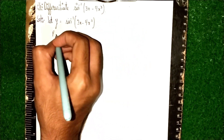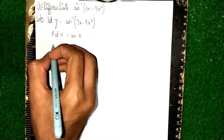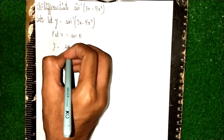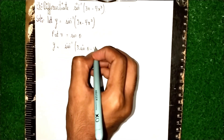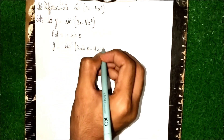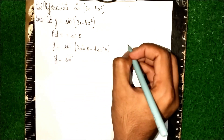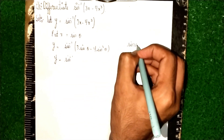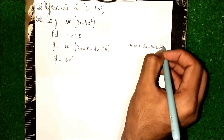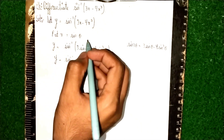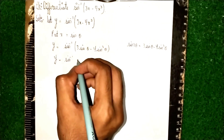Now let x equal to sin θ. Substituting, y becomes sin⁻¹(3 sin θ - 4 sin³ θ). We know the identity sin 3θ = 3 sin θ - 4 sin³ θ, which is exactly why we take x = sin θ. So y becomes sin⁻¹(sin 3θ).